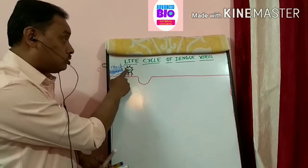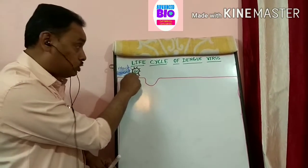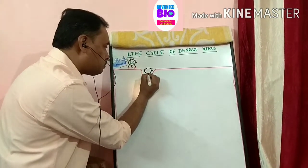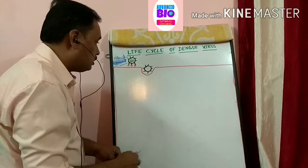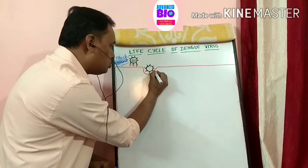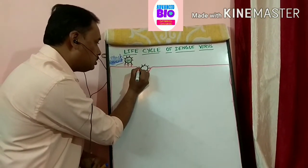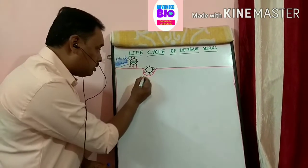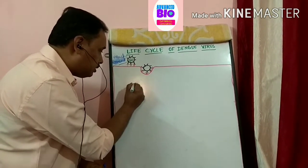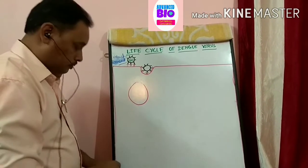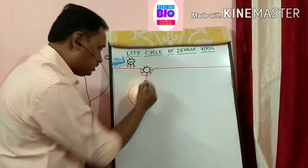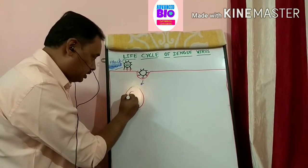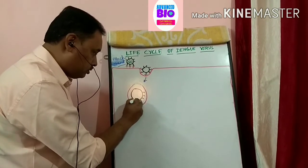The immune cell tries to engulf the virus. The viral body has spikes which bind to the receptors on the cell surface. Through the process of phagocytosis, the virus enters the cell body, forming a phagosome or endosome containing the viral body.